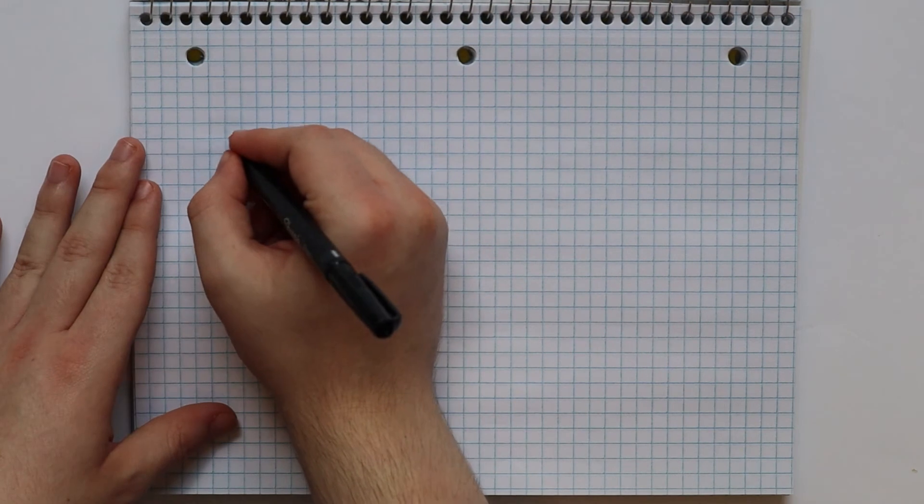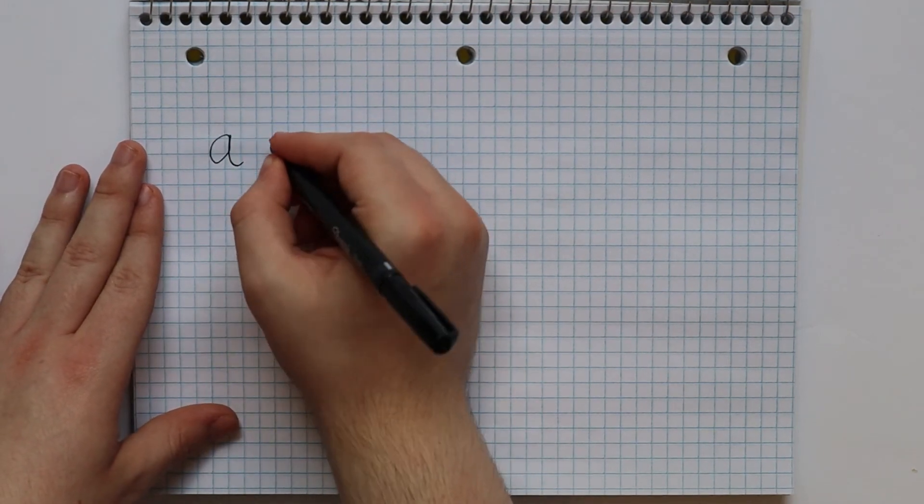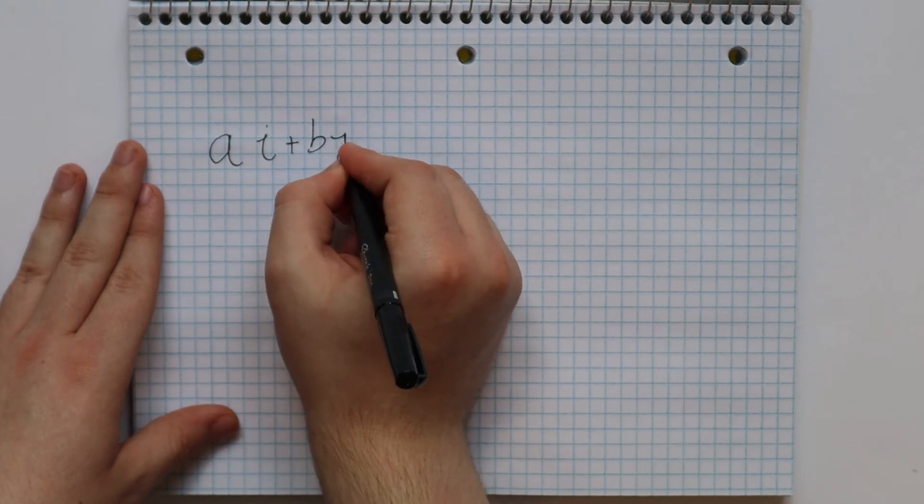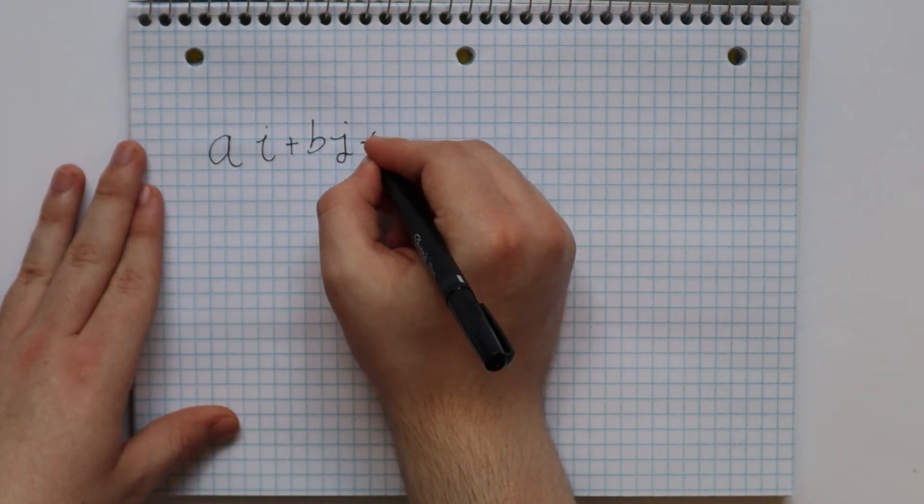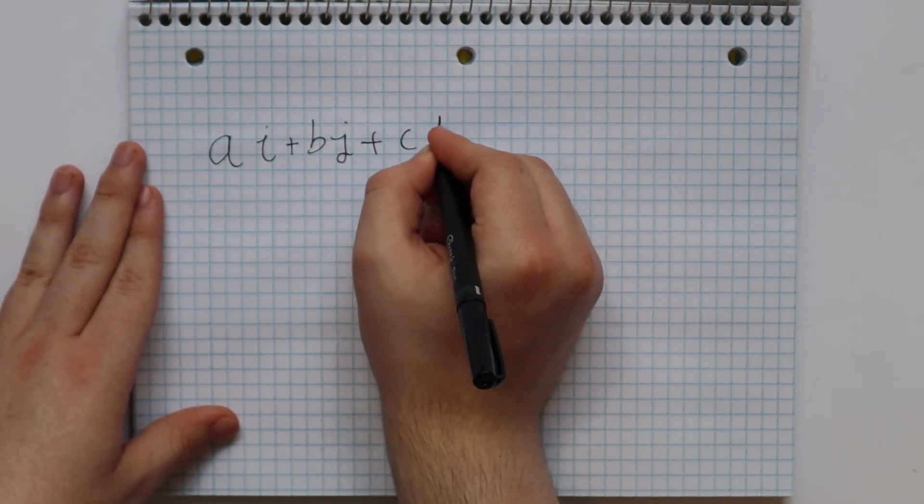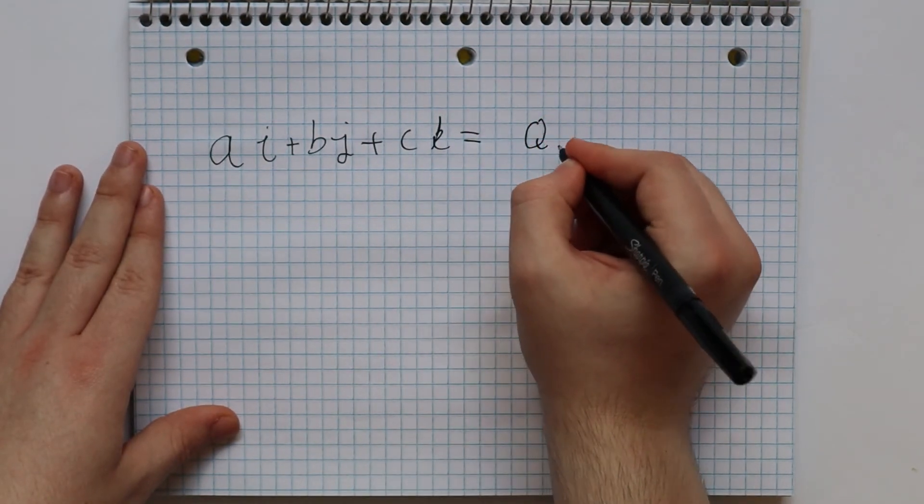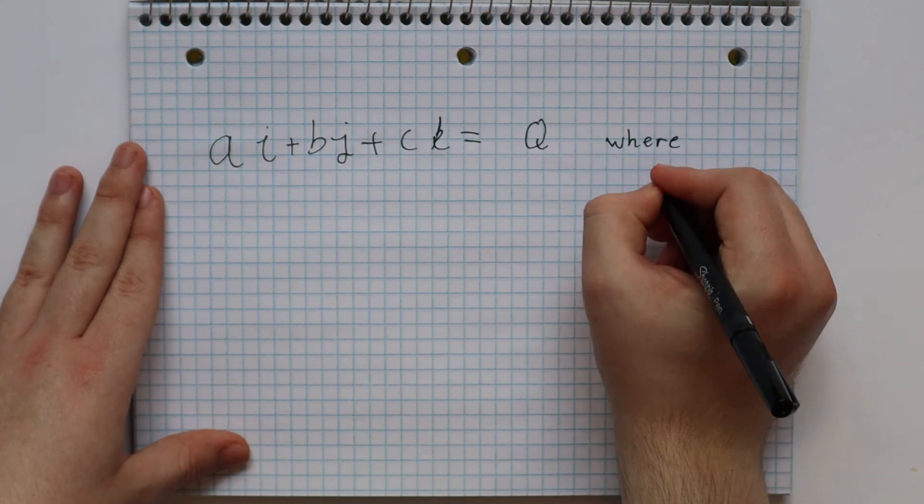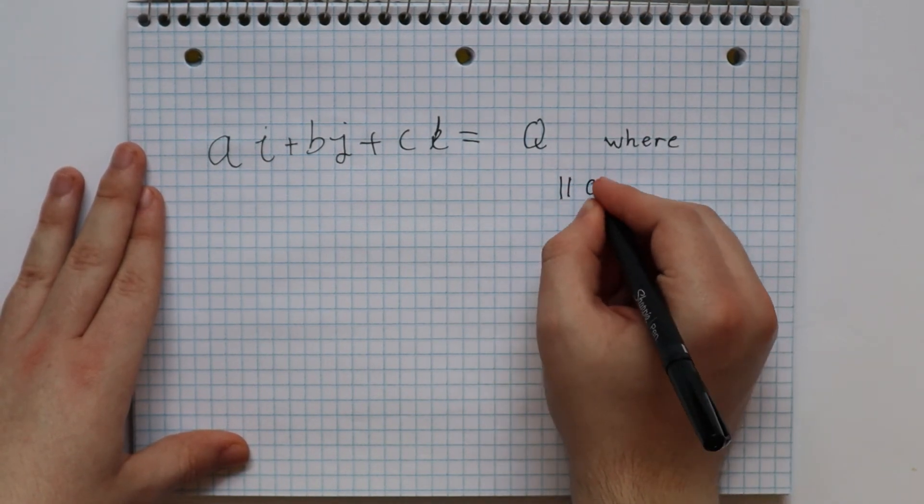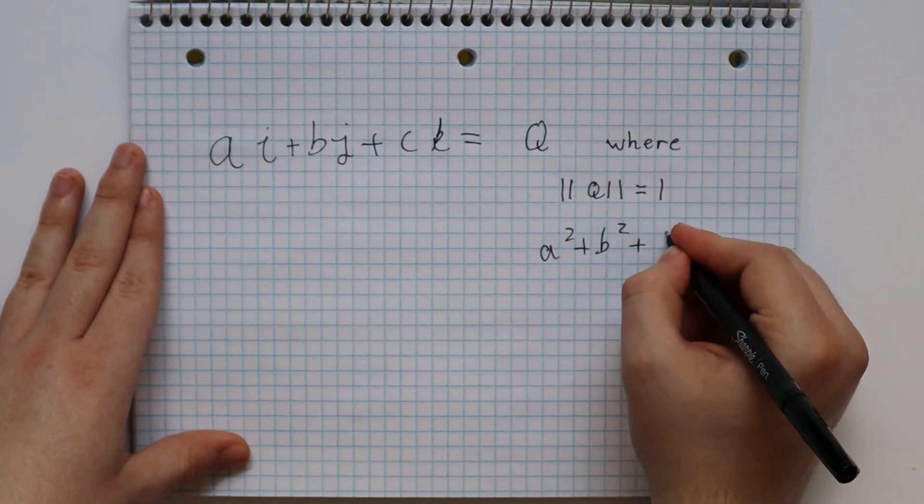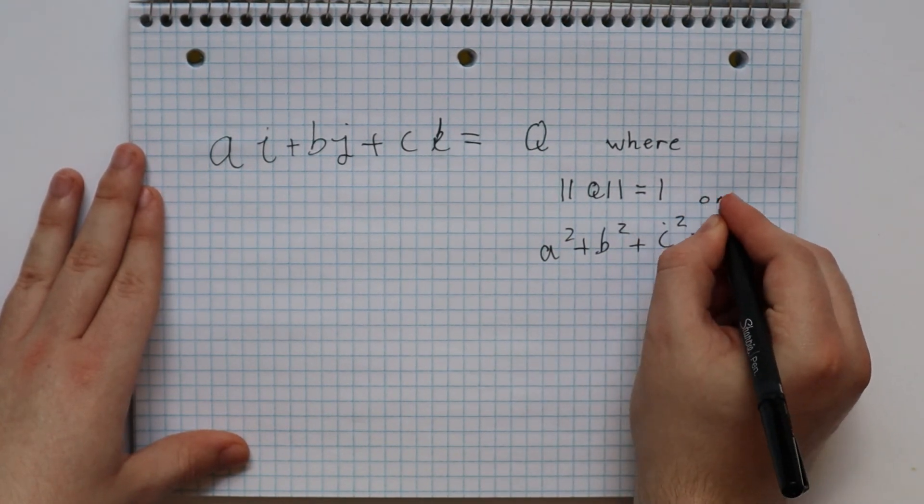This result can be used to prove that any unit quaternion with no real part is another non-principle square root of negative 1. Which written down looks like for any quaternion of the form ai plus bj plus ck equals, say, q. And if a squared plus b squared plus c squared equals 1, then q squared equals negative 1, or q is another square root of negative 1.